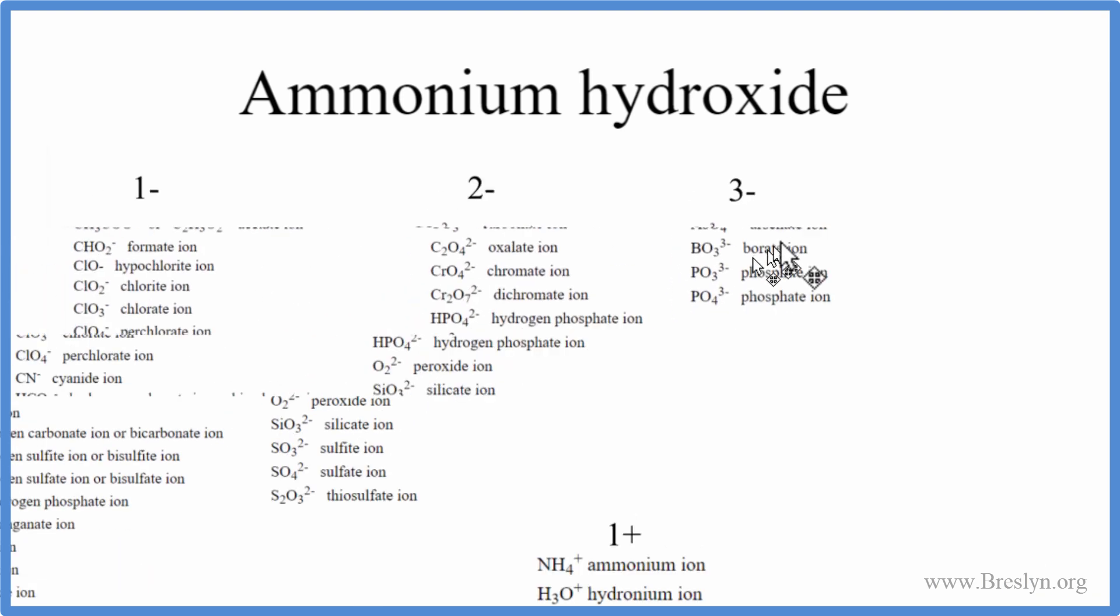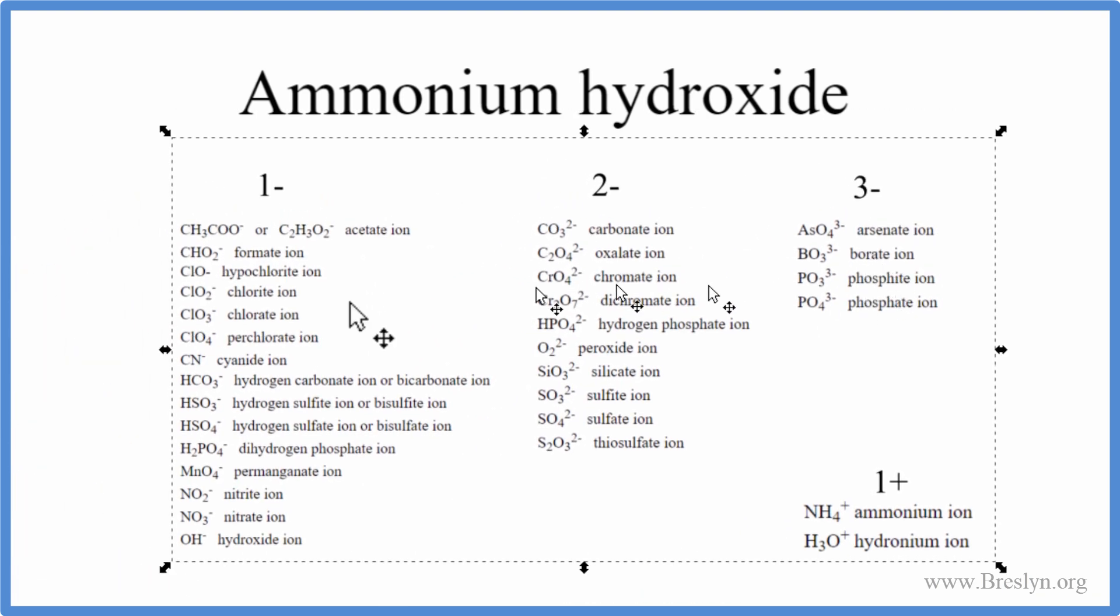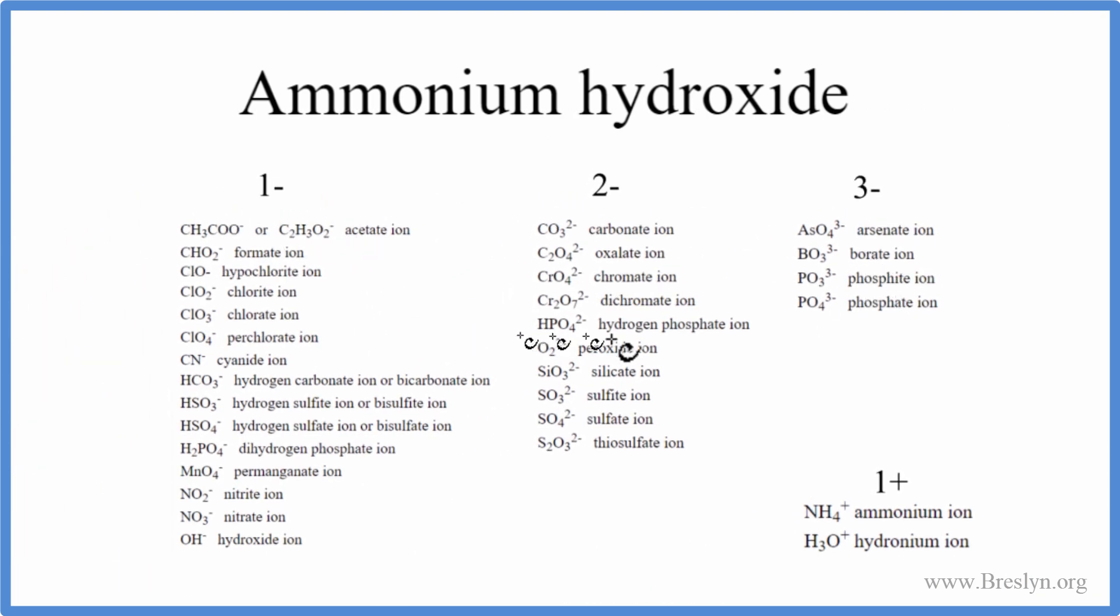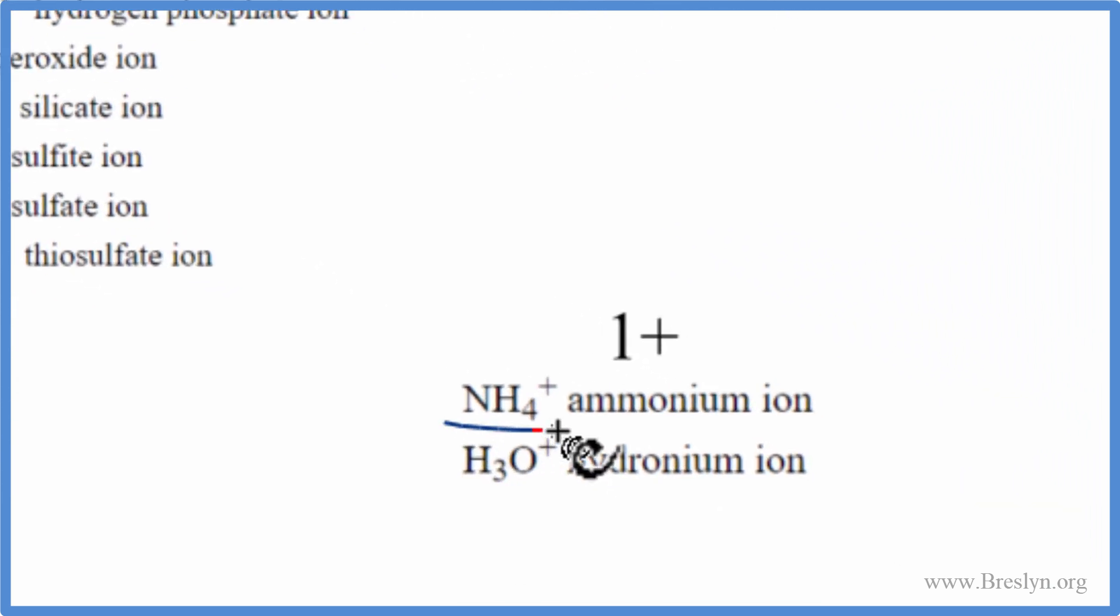We can look that up on a table of polyatomic ions. So if we look at the table here, there's ammonium NH4+, the ammonium ion. It has a positive charge, one plus. It's one of the few positive polyatomic ions here. This is a great one to memorize.